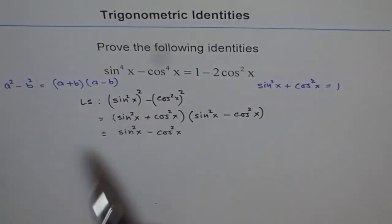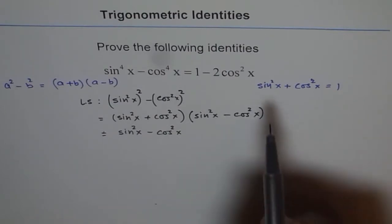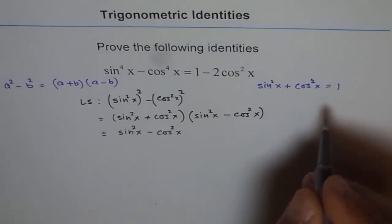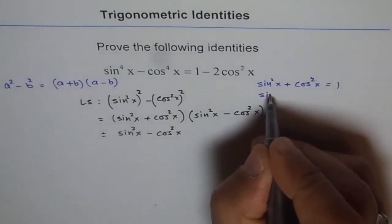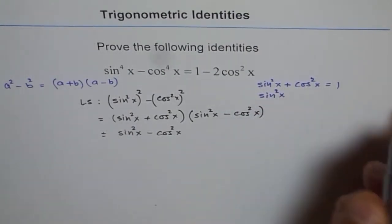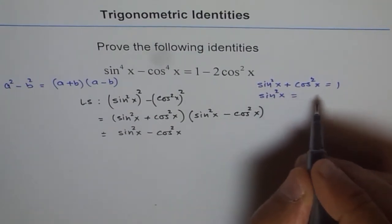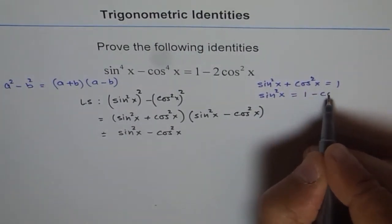That means we don't need sin^2x on the left side. So from this Pythagorean identity, we can replace sin^2x by 1 - cos^2x. Now from here, sin^2x can be written as 1 - cos^2x.